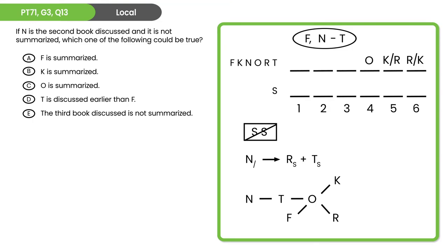Here's the second question. Welcome back. This is a local question giving us new information: N is the second book discussed. We pop N into the game board, and since it is not summarized, we slash out the second spot in the bottom row. Before looking at answer choices, make as many inferences as possible. Run with the local piece of information before you look at the answer choices.